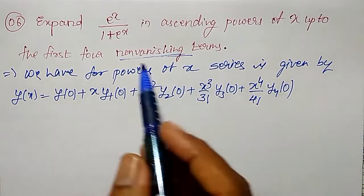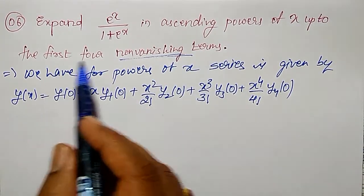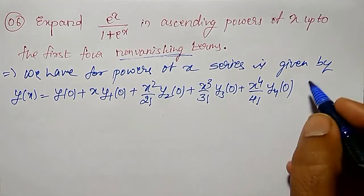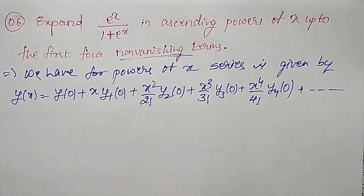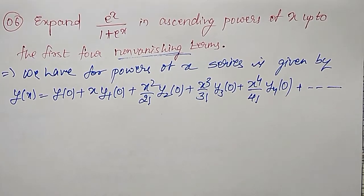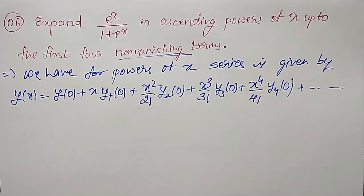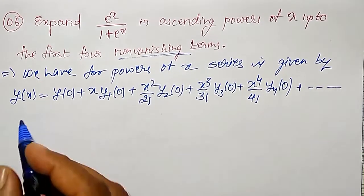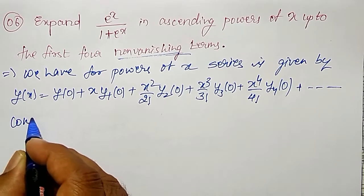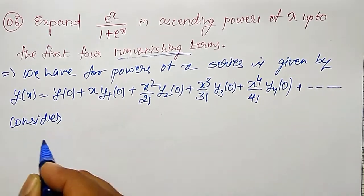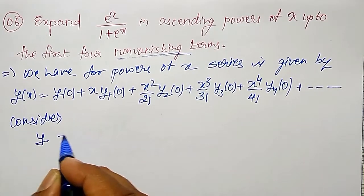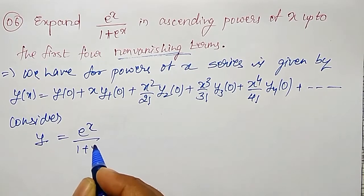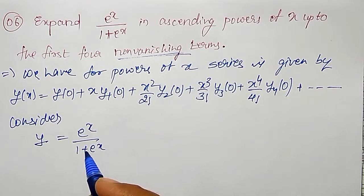But I have to find out the first four non-vanishing terms, so y₁, y₂, y₃ and so on should not vanish — should not become zero. Therefore, let me consider y equal to e to the power x divided by 1 plus e to the power x.